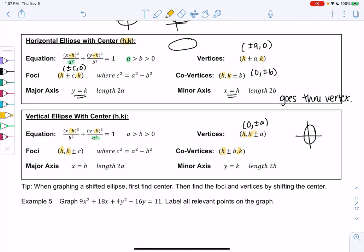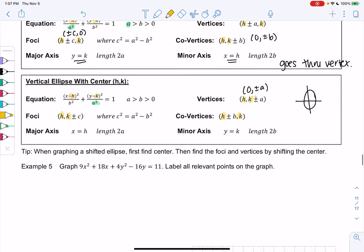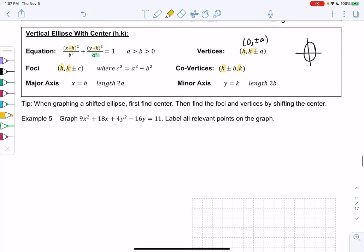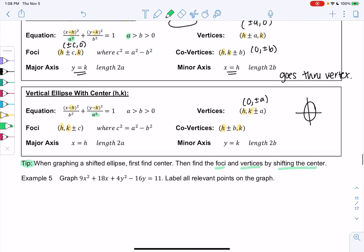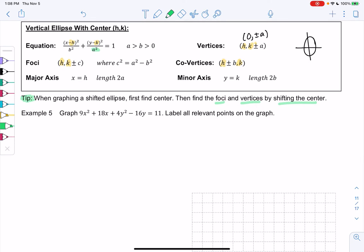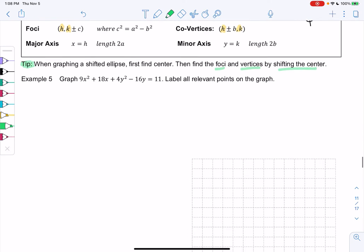So to do this, we're going to have to complete the square. So hopefully we remember that a little bit. When graphing an ellipse, I find the center, and then I find the foci and the vertices by shifting from the center. So rather than using the formulas, I take the center and I just count. So as I do the example, you'll see what I'm talking about.